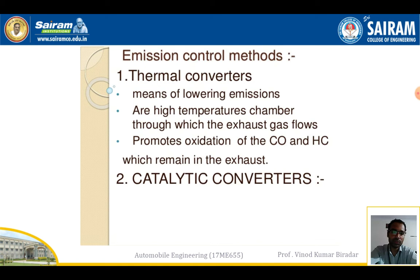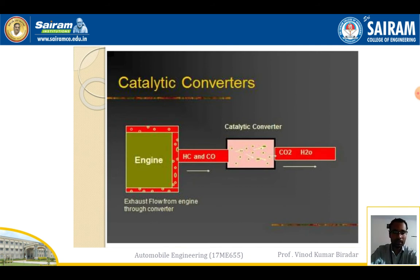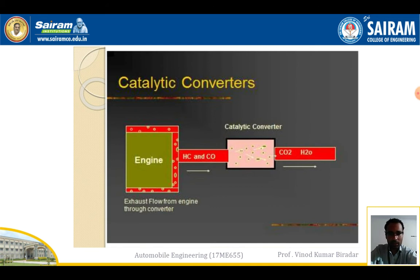The second and more commonly used device in modern vehicles is the catalytic converter. Its main function is to reduce harmful gases into harmless gases. The block diagram shows one side connected to the engine and the other to the exhaust. Inside the catalytic converter there are two parts — a reduction section and an oxidation section — functioning like two filters.